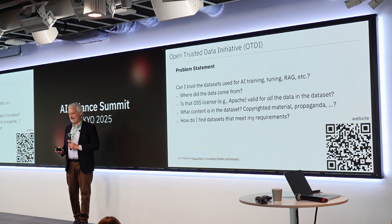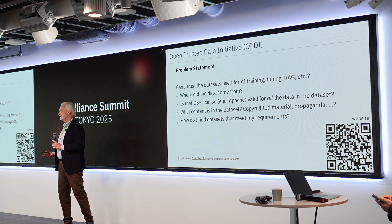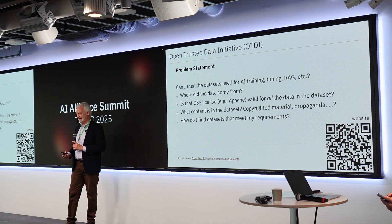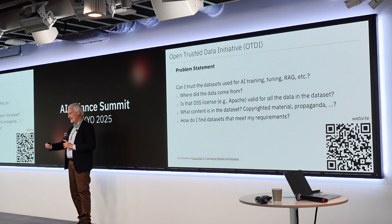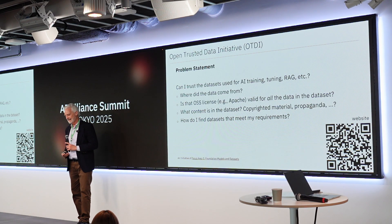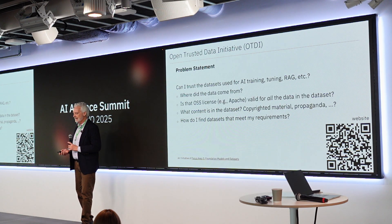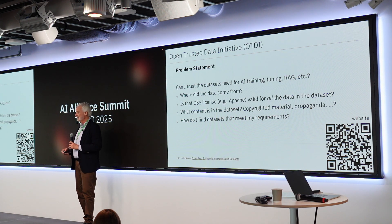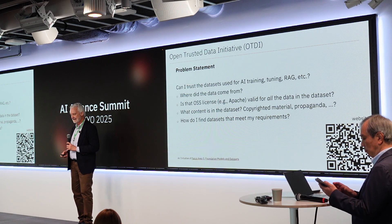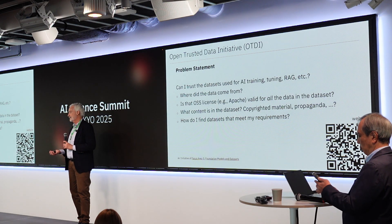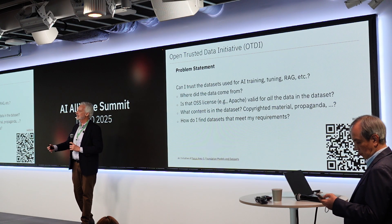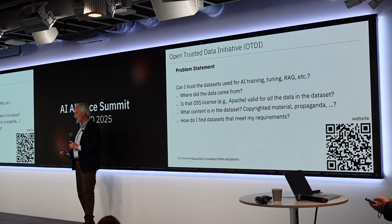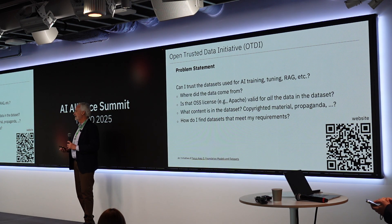When you look at a data set, a couple of things come to mind: where did this data actually come from? Was it acquired legally? It may have a license like the Apache license, but we've discovered at IBM that sometimes you look into the data set and find content that cannot legally be licensed under Apache. Does it have copyrighted material? Can you trust it? Does it have propaganda or something like that? And if those data sets exist, where do I find them? We're trying to solve these increasingly important problems as people think about legal risk and exposure to liability.